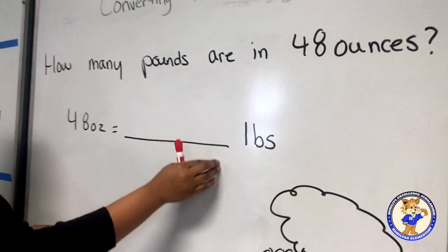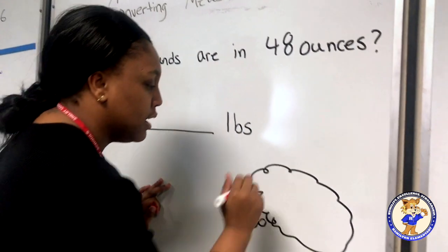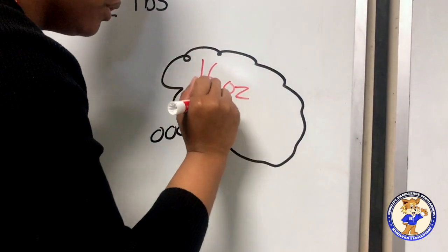48 ounces is equal to blank pounds. Now, if we think about it, in our little thinking bubble, 16 ounces equals one pound.